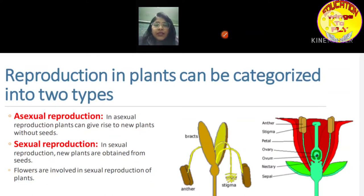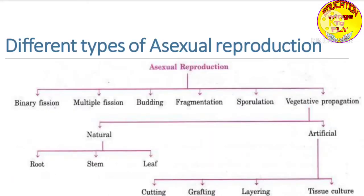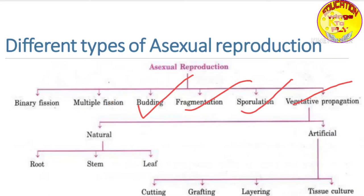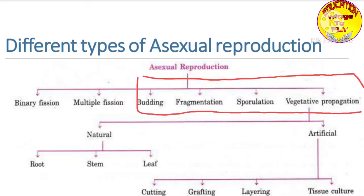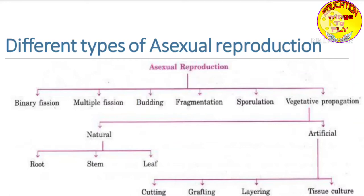Asexual reproduction has different types: the first is binary fission, the second is multiple fission, then budding, then fragmentation, then sporulation, and then vegetative propagation. In this class, we will learn about budding, fragmentation, sporulation, and vegetative reproduction. Binary fission and multiple fission will be covered in higher classes as they are not seen in plants but in animals.